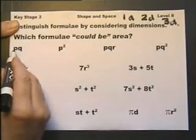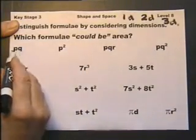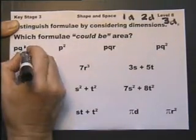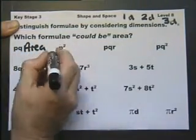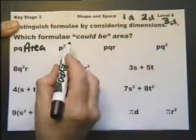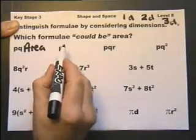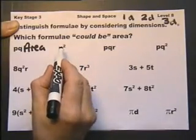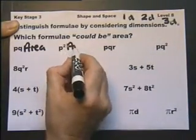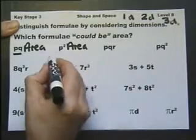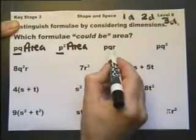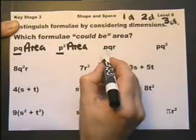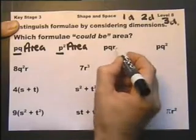PQ means a dimension multiplied by a dimension. A length multiplied by a length, which would work out to be an area. P squared means a length of P multiplied by a length of P, which would produce an area. So these could be area. Whereas P times Q times R would be three dimensions multiplied together, so that would be a volume.